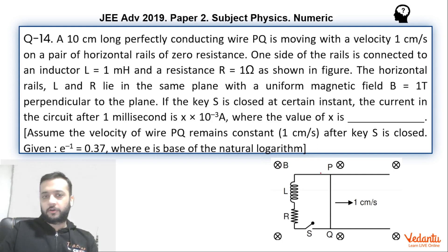There is a rod of length 10 centimeters which is moving at a constant speed of 1 centimeter per second in the presence of magnetic field of value 1 tesla. And the magnetic field is perpendicular to the plane of this crane.